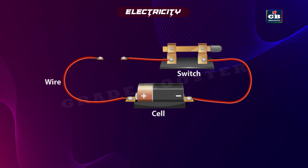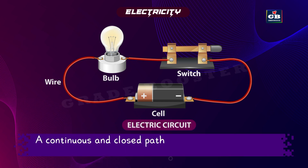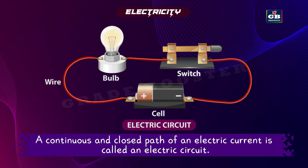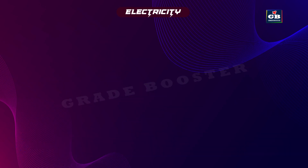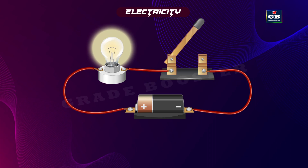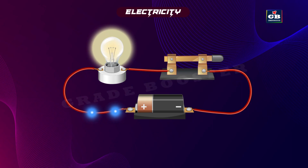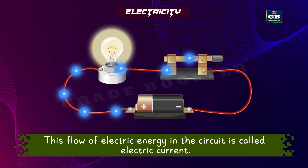This is an electric cell, this is an electric wire, this is a switch, and this is an electric bulb. This arrangement is called an electric circuit. A continuous and closed path of an electric current is called an electric circuit. If the switch is in the off position, the circuit is not complete.